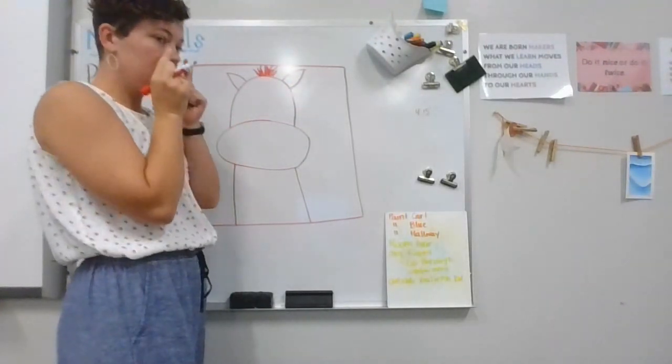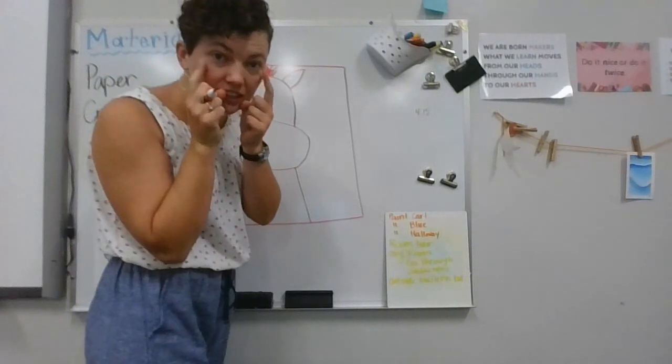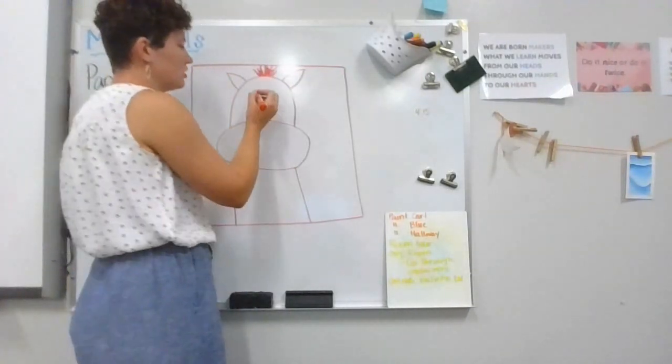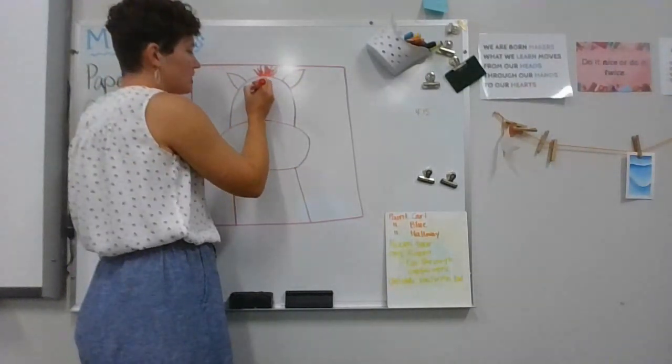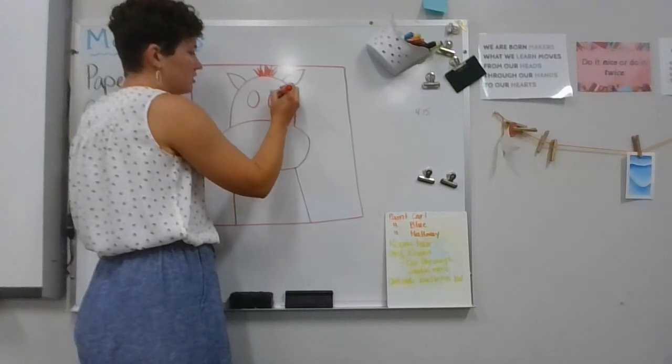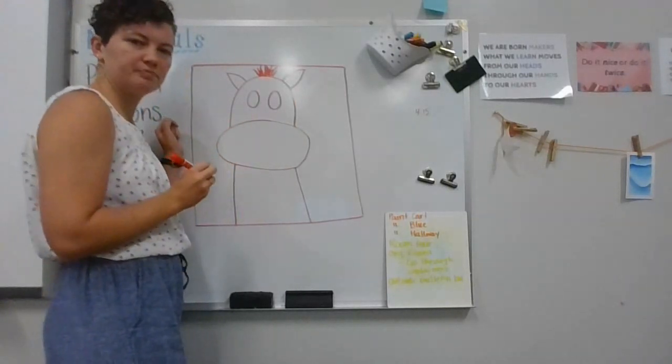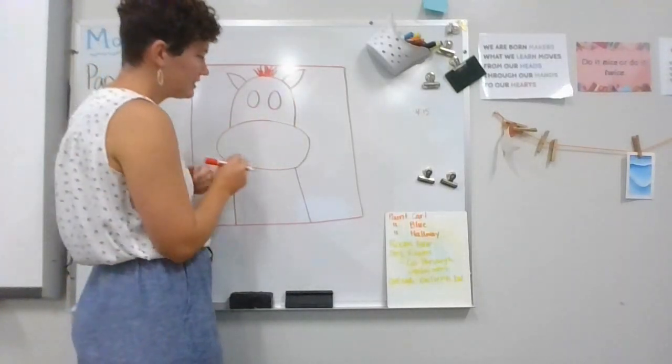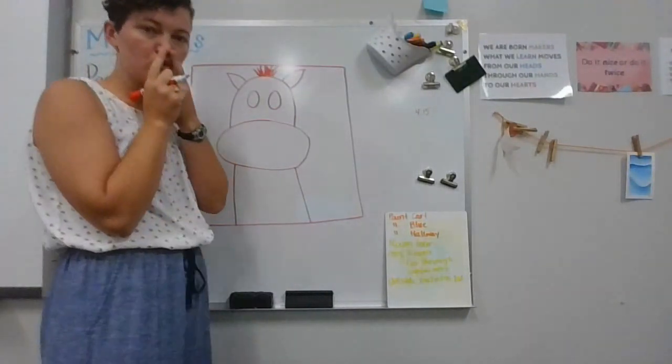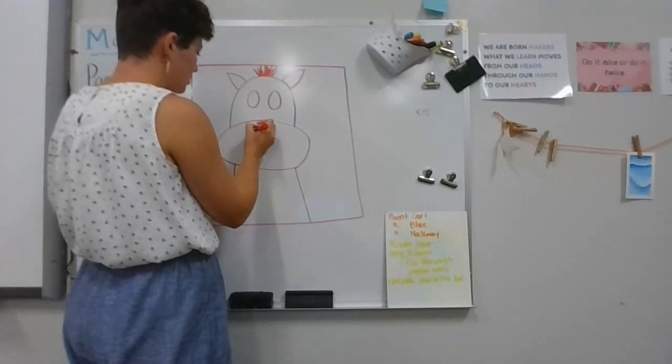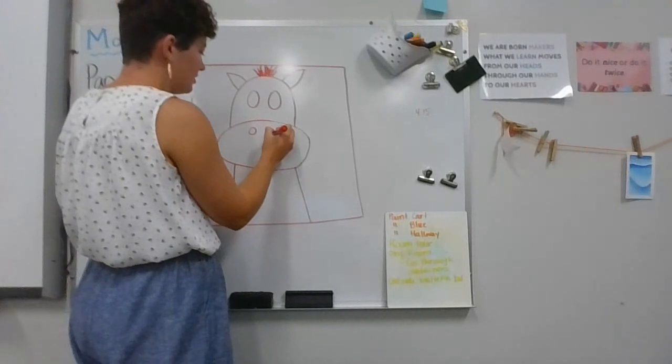All right, next he needs his eyes. So you're going to do two circles, and I'm going to make mine pretty big, two circles. Now he needs the same thing for his nose. You're going to do two circles. I'm going to make them a little bit smaller.